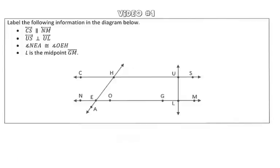In this video, we are asked to label the following information in the diagram below. So the first bullet point says line CS is parallel to line NM. So this symbol right here means parallel to.